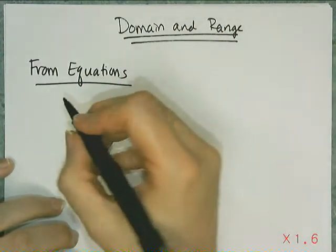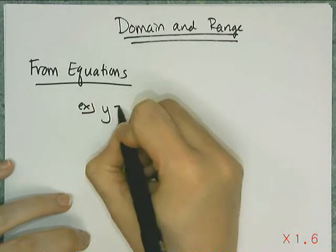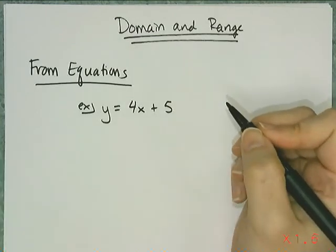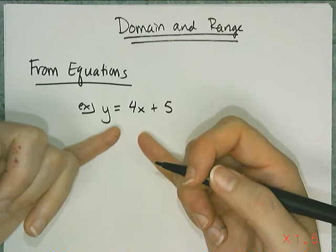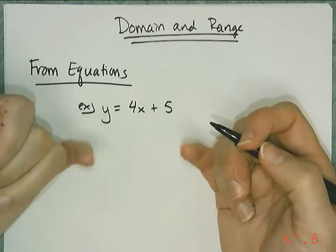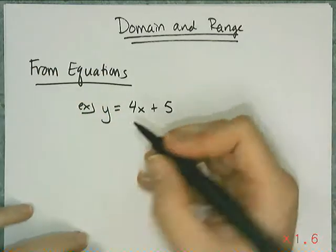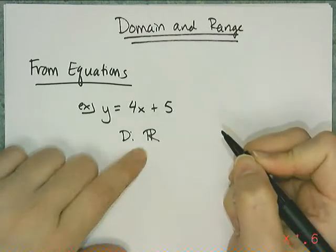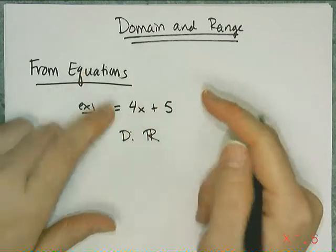For the domain of a function in equation format, you have to think about what x values you can and can't use inside the function. For example, y equals 4x plus 5 is linear. Is there a value of x in the real numbers that I cannot multiply by 4 and add 5 to? There's not. So this function's domain is all real numbers, because I can plug in whatever I want for x and get some output value.